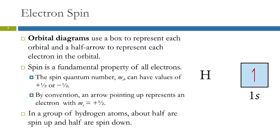When filling orbital diagrams, in each box you write one up arrow and then one down arrow. By convention, we always put the first electron pointing up.